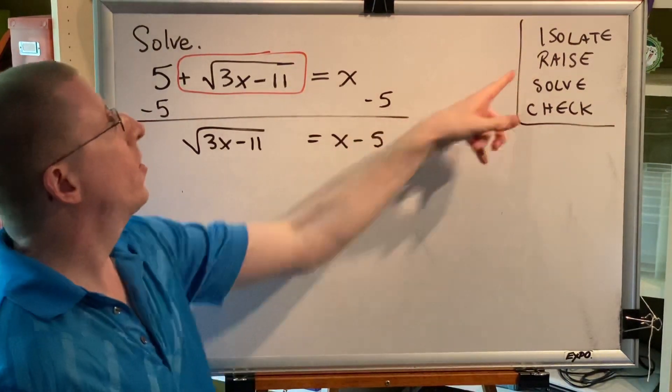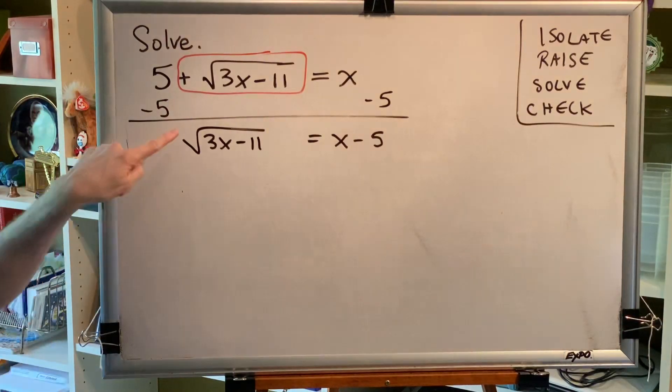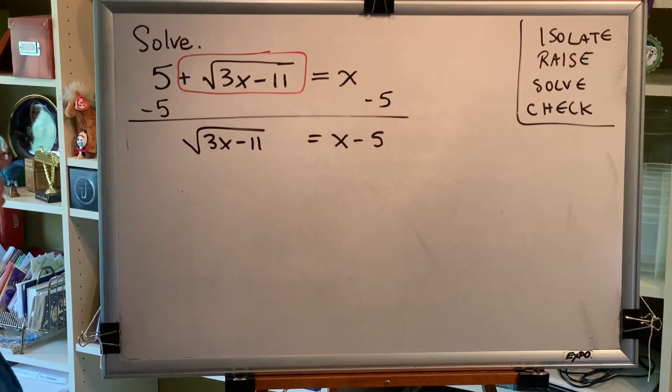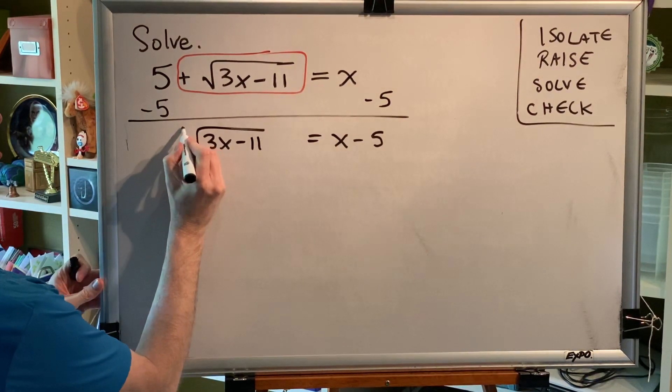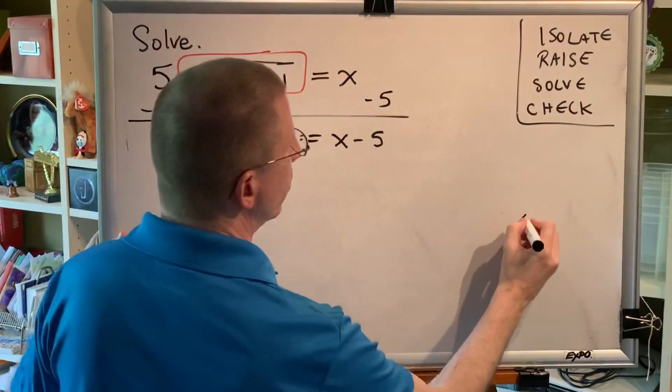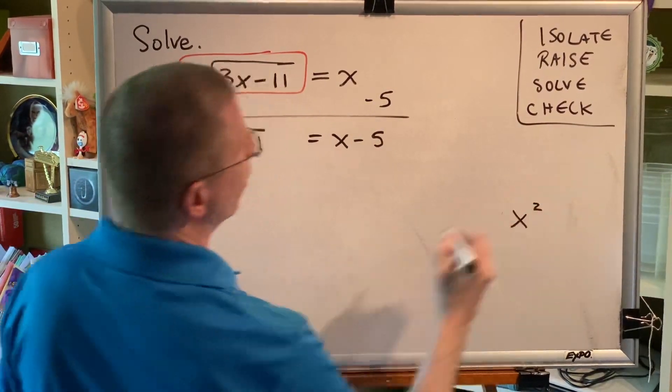Step 2: Raise both sides to a power that matches the index of the isolated radical. This is a square root. Even though we don't write it, there's a hidden 2 right here, and we know that because this is consistent with the language of algebra.